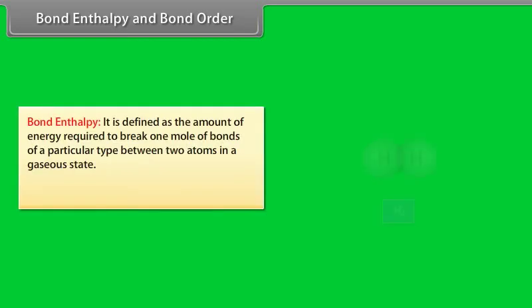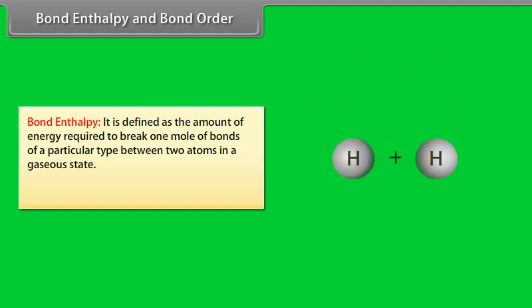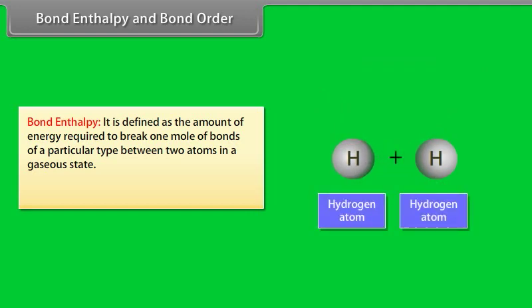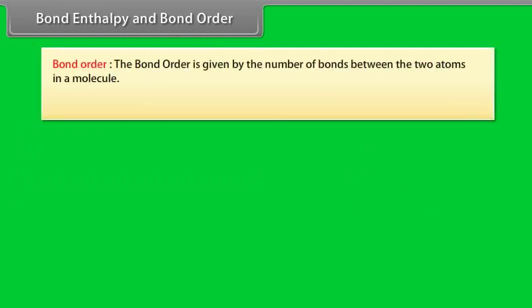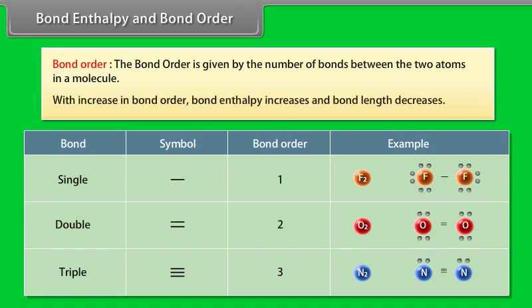Bond enthalpy is defined as the amount of energy required to break one mole of bonds of a particular type between two atoms in a gaseous state, with units of kilojoules per mole. Bond order is the number of bonds between two atoms in a molecule. With increase in bond order, bond enthalpy increases and bond length decreases.